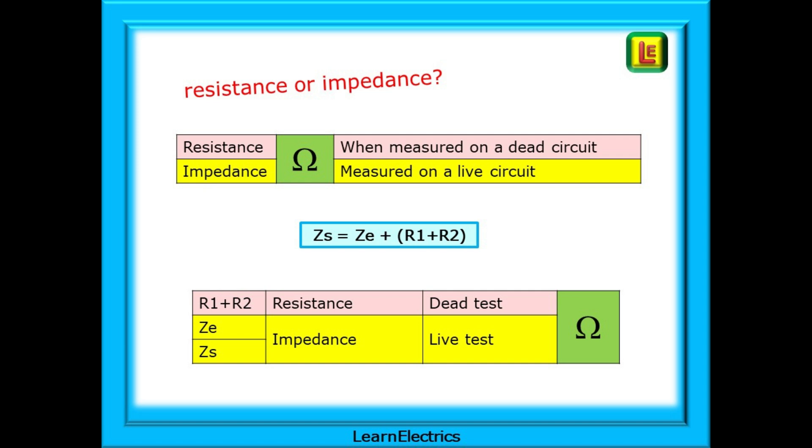R1 plus R2 is a resistance because it is measured on a dead circuit. ZE will always be an impedance. For most of us, we will not have the opportunity to turn off the whole of the town whilst we carry out our tests, so it will be tested live. ZS is a mixture of ZE and R1 plus R2. And because ZE will be a live circuit, it means that ZS will also be a live test and called an impedance.